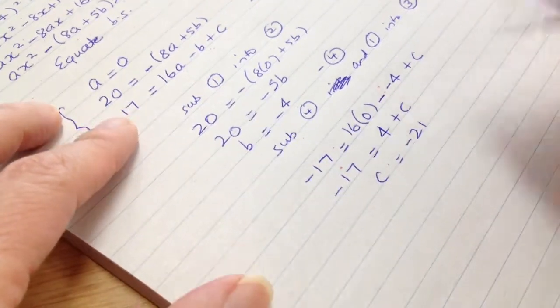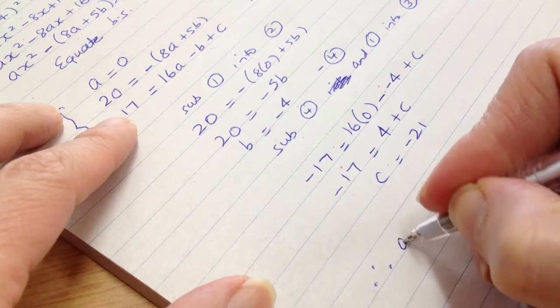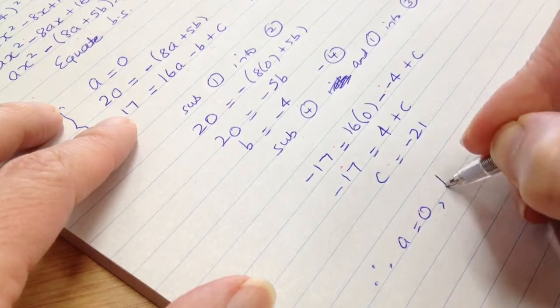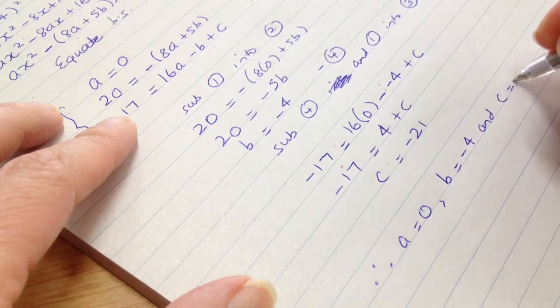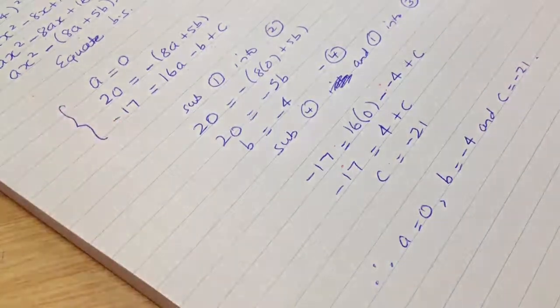All right, and we'll just write a nice conclusion that therefore a is equal to zero, b is equal to 4, and c is equal to minus 13. Thank you.